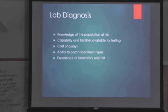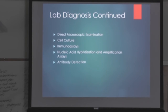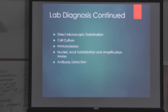For lab diagnosis of chlamydia: they need knowledge of the population at risk, the capability of the facilities available for testing, the cost of the assays, the ability to batch specimen types, and the experience of the laboratory scientist. It's not an easy thing to identify. For direct microscopic examination — particularly for trachoma and conjunctivitis — columnar epithelial cells will be present. They'll also run cell culture, immunoassays, nucleic acid testing, and antibody detection.